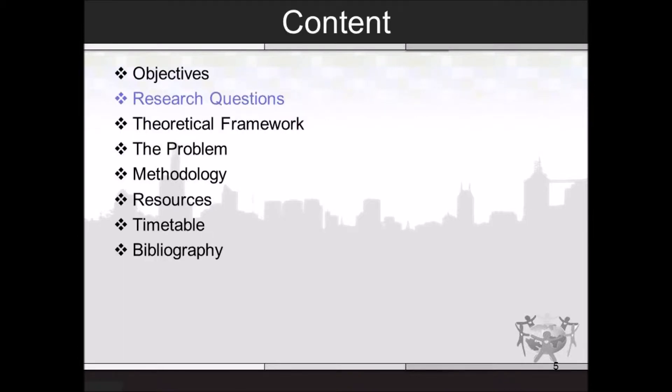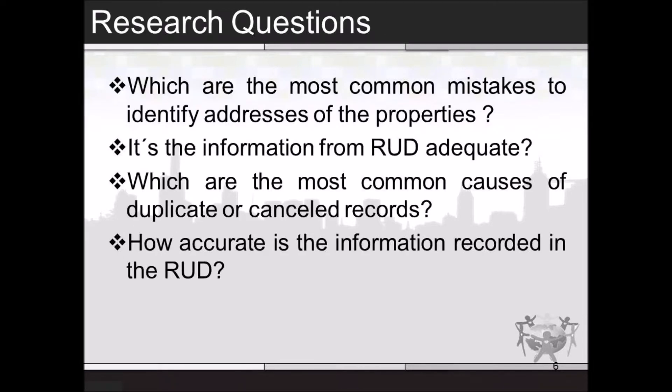I have four research questions. Which are the most common mistakes to identify addresses of the properties? Is the information from the only record of victims adequate? Which are the most common causes of duplicate or cancelled records? How accurate is the information recorded in the only record of victims?